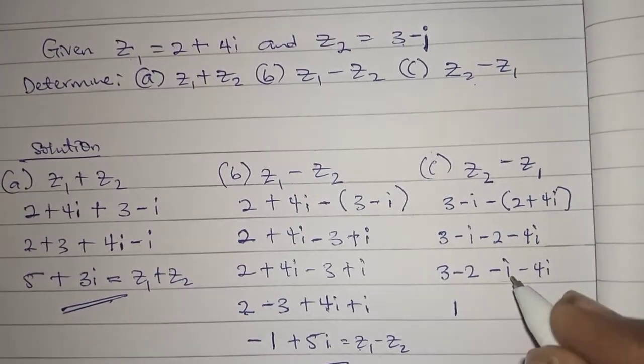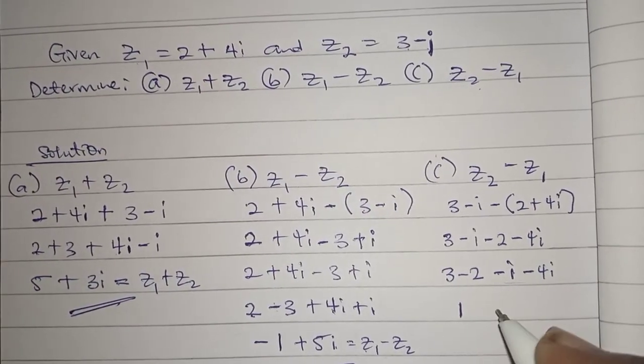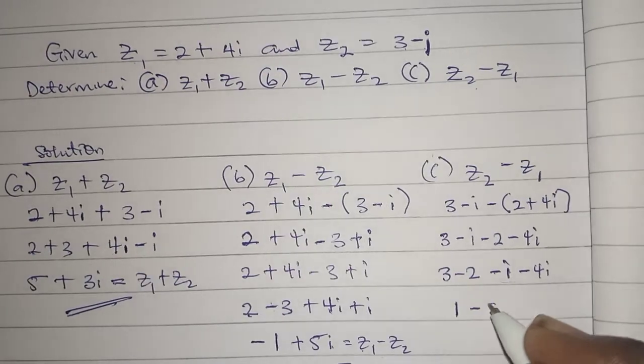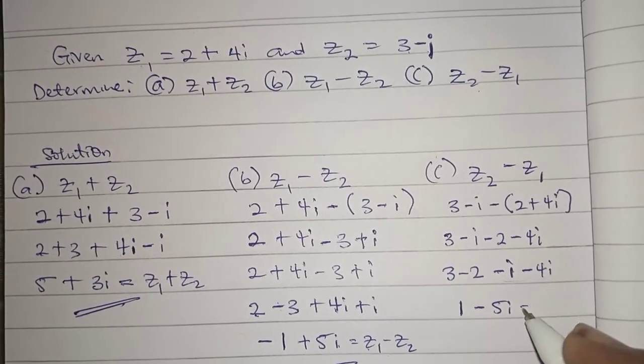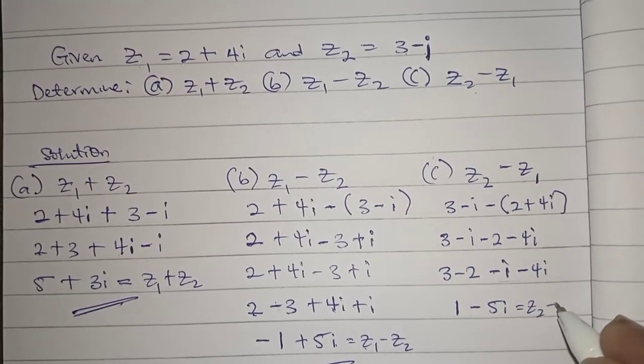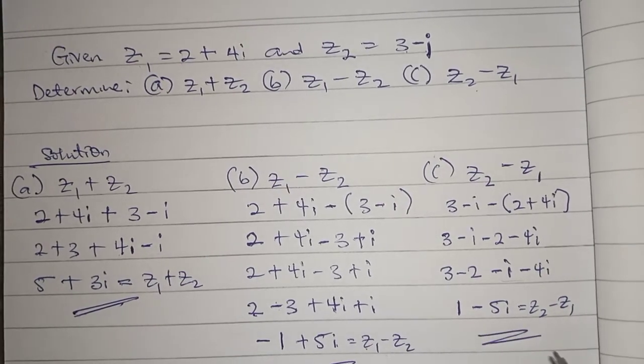That's for the complex number here. 3 minus 2 is 1, minus i minus 4i is minus 5i. So this is z2 minus z1.